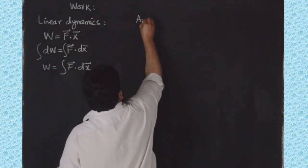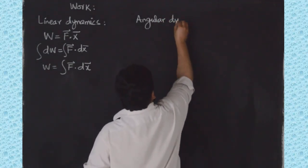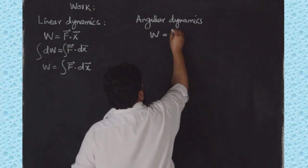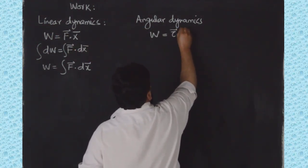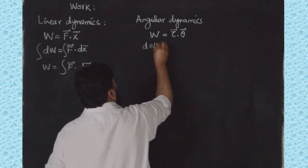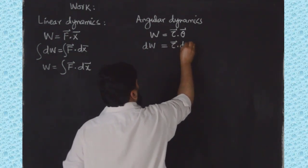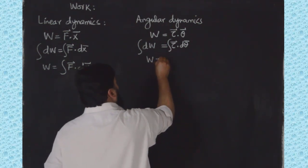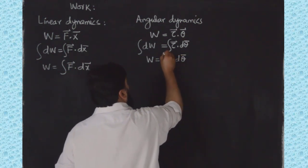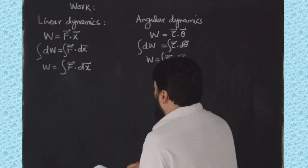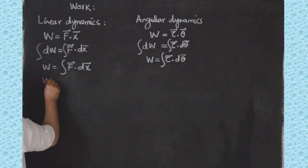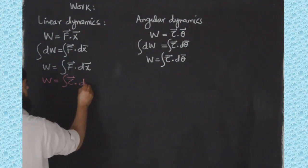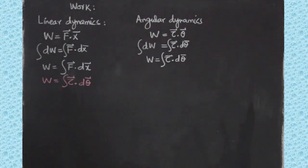Now in the case of rotational work in angular dynamics, the form remains the same but now it uses rotational force dot angular displacement. So dW equals tau dot d-theta, and integrating both sides gives W equals the integral of tau dot d-theta. So we can compare: the linear force corresponds to angular force (torque), and linear displacement corresponds to angular displacement (theta).